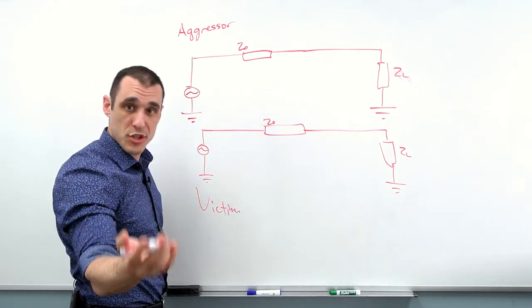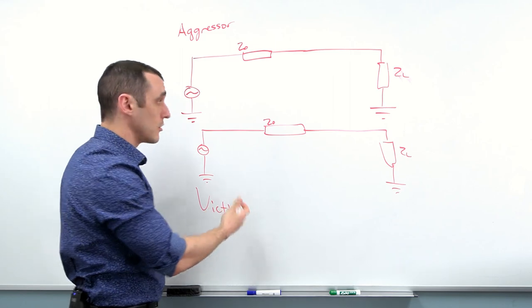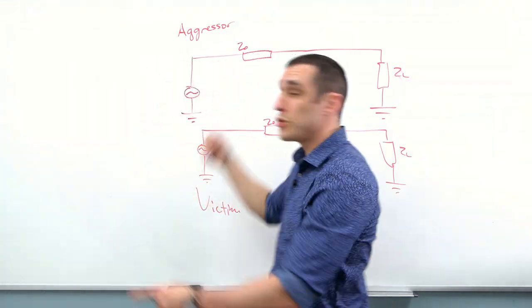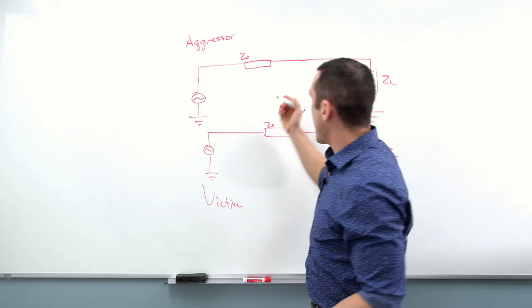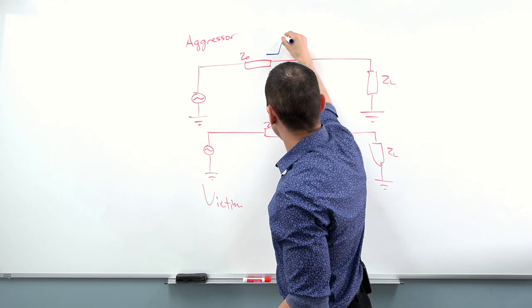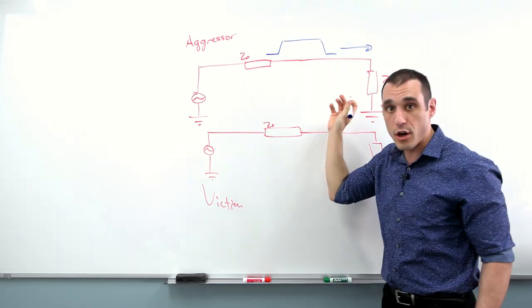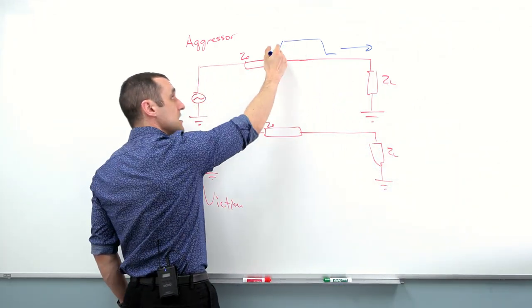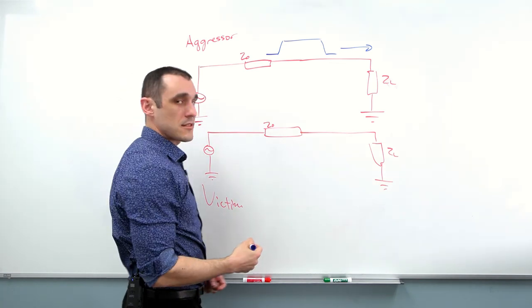Of course, the situation could be reversed — the victim could be driving a signal and could induce some noise into the other trace, so the two roles can be swapped. When we have a signal on the aggressor line traveling towards the load, it is during these switching events that noise can be induced on the victim trace.